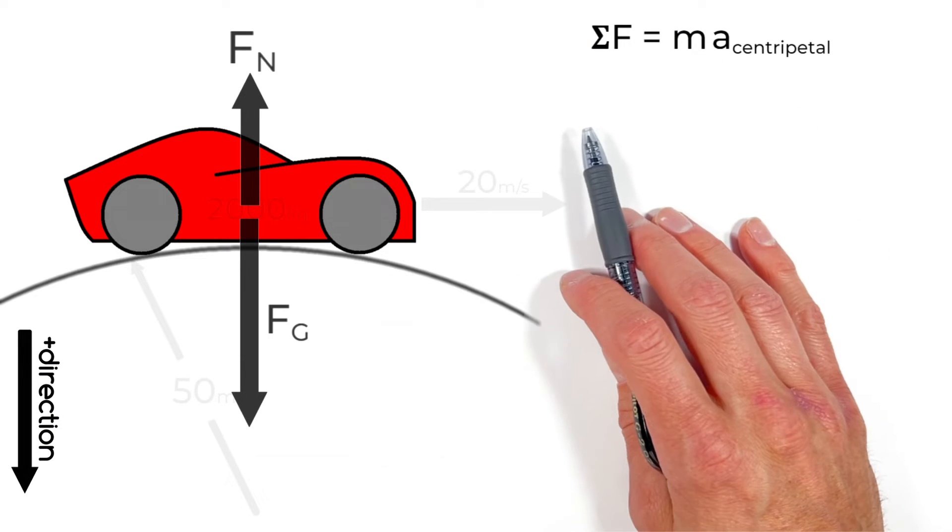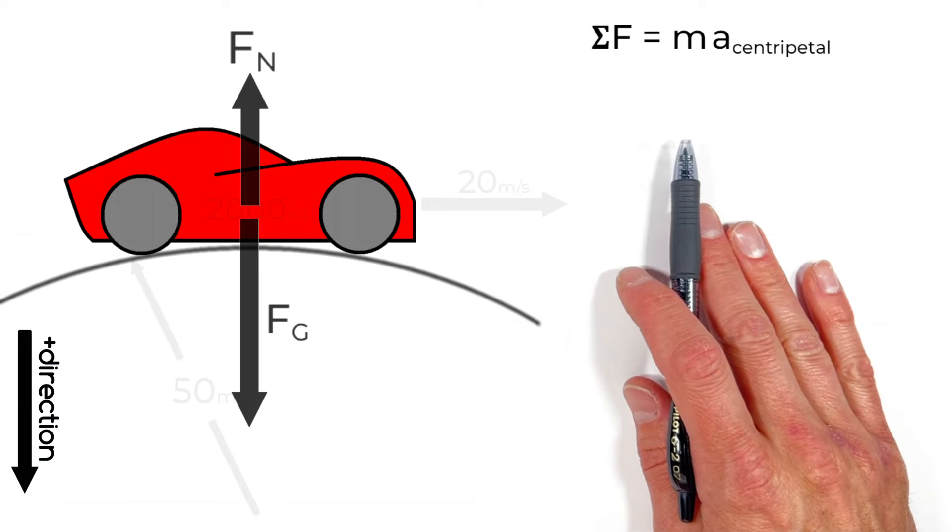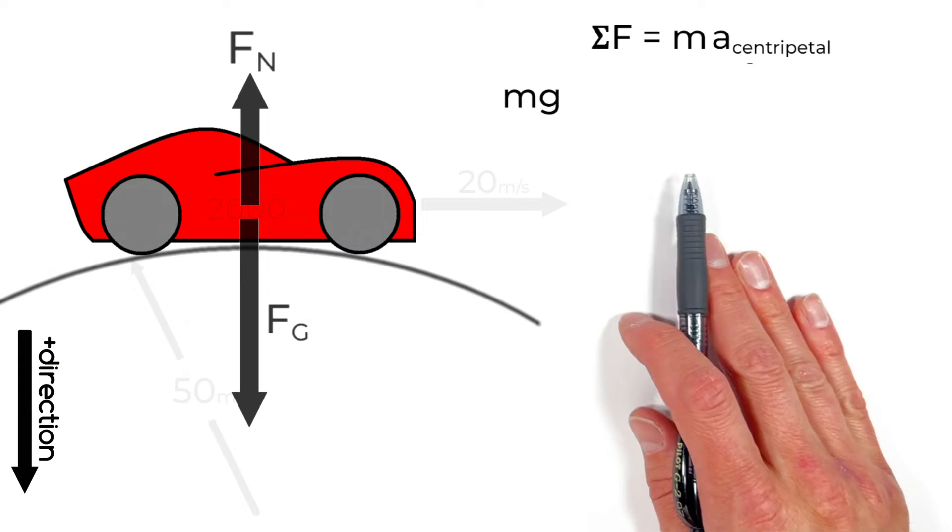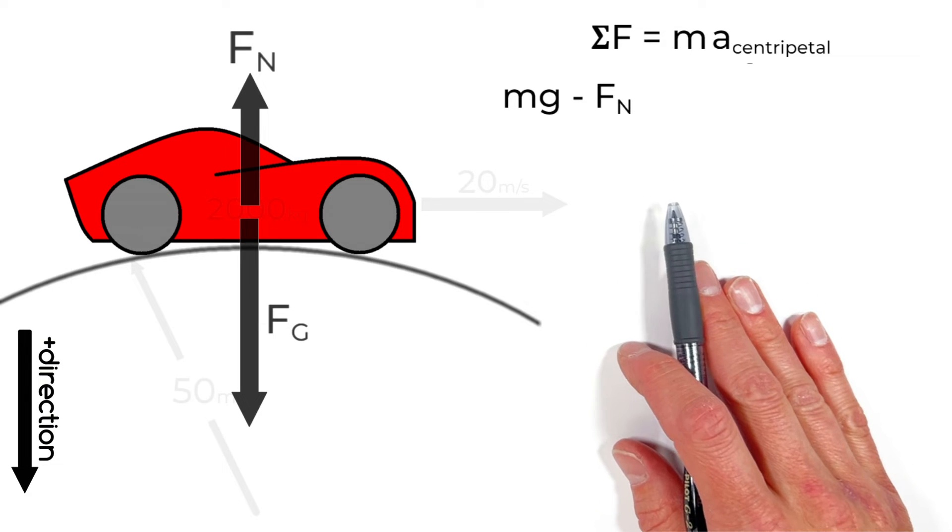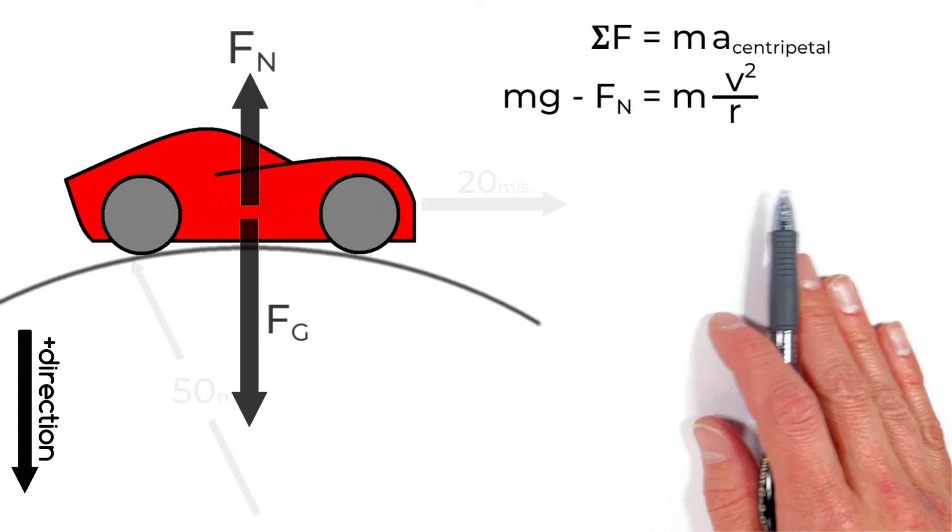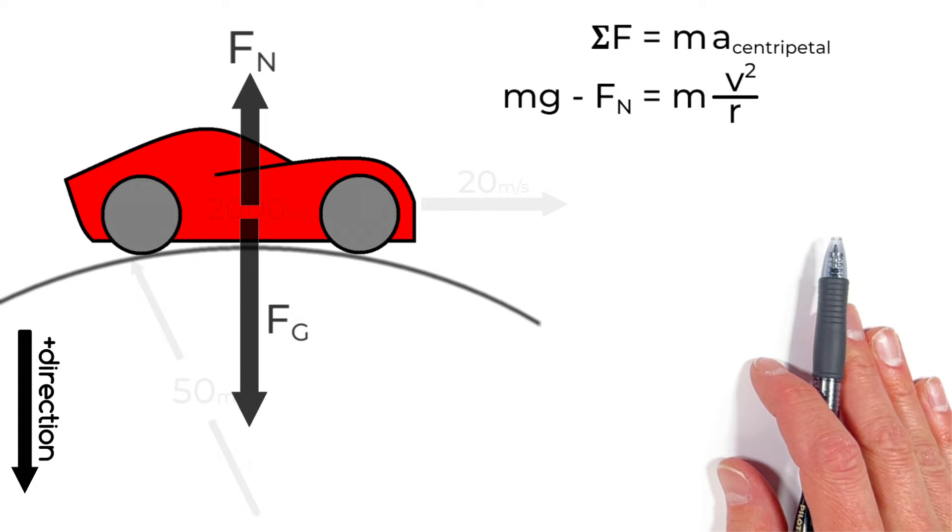Going back over to Newton's second law the sum of all forces is actually going to be mg the force by gravity minus the normal force which we're trying to solve for. So we set those equal to our centripetal force that's m times v squared over r.